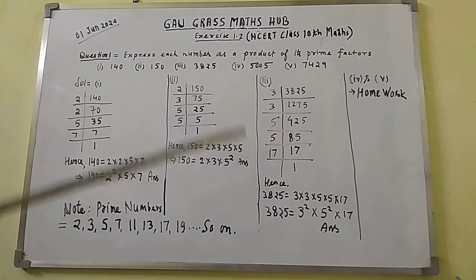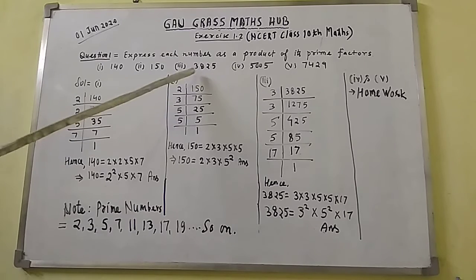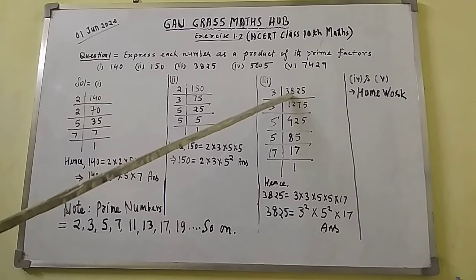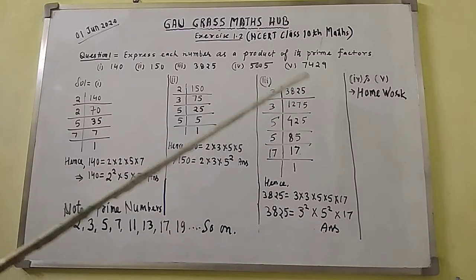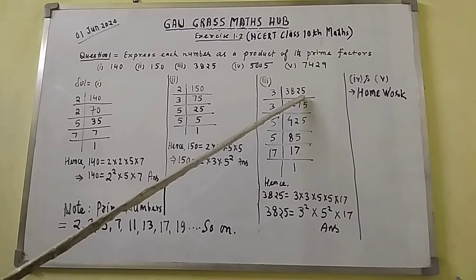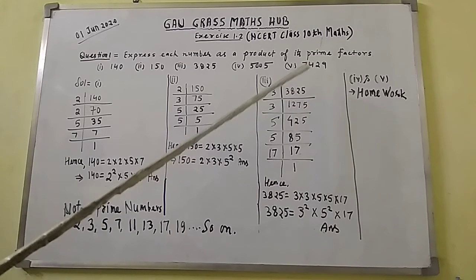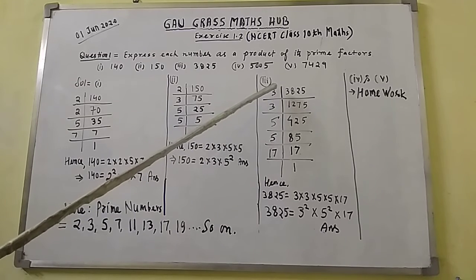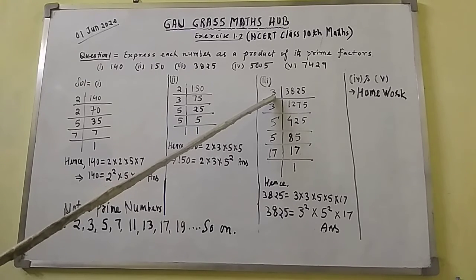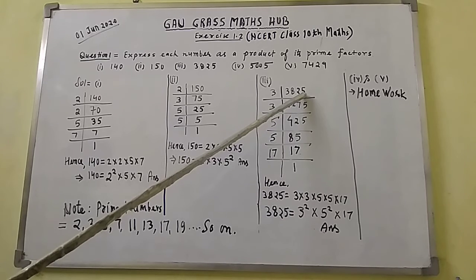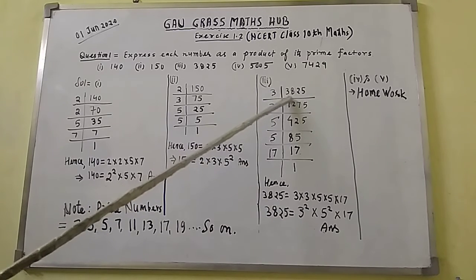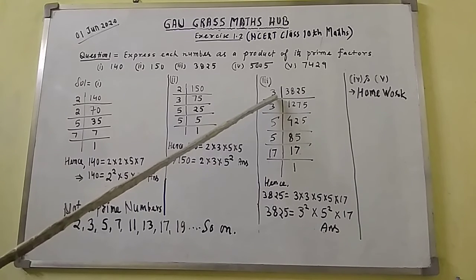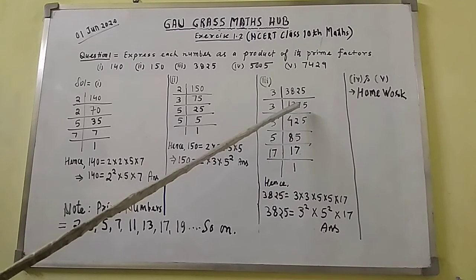Now question number 3: the number given is 3825. Write down 3825. The digit at the unit place is 5, so it can be divided by 3 or 5 — take the least prime number 3 first. Divide 3825 by 3; the result is 1275. Then 1275 also has 5 at the unit place and can also be divided by 3; the result is 425.